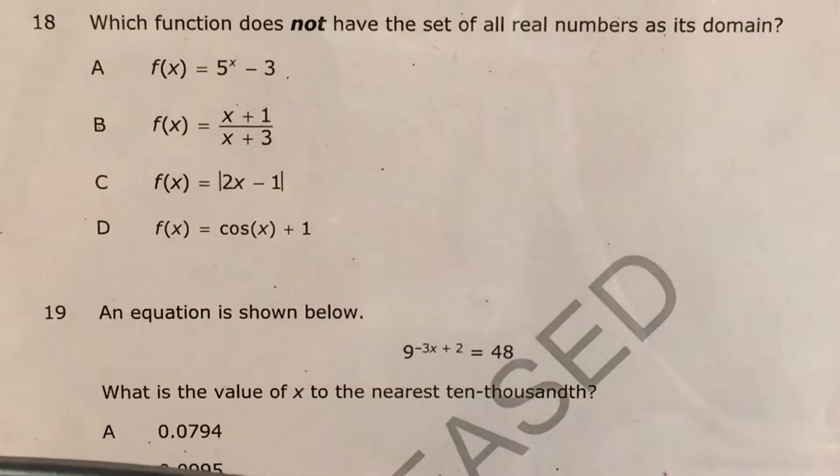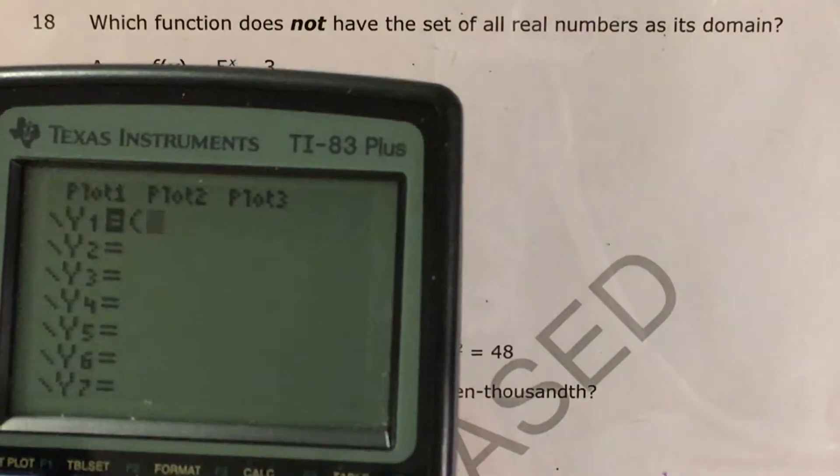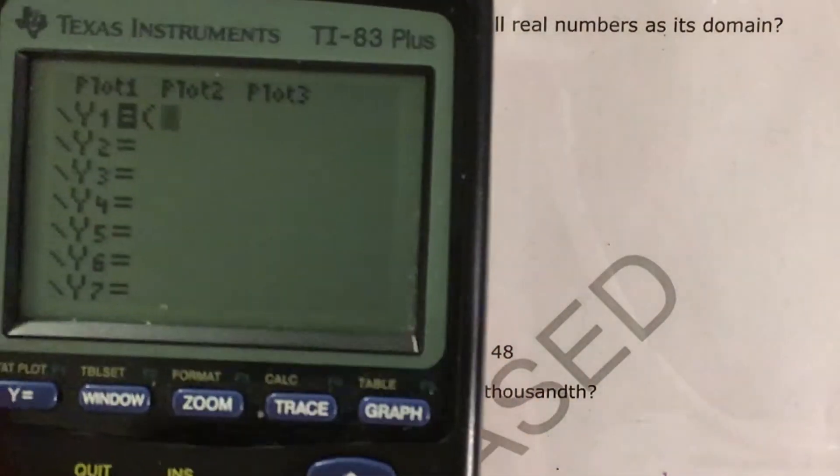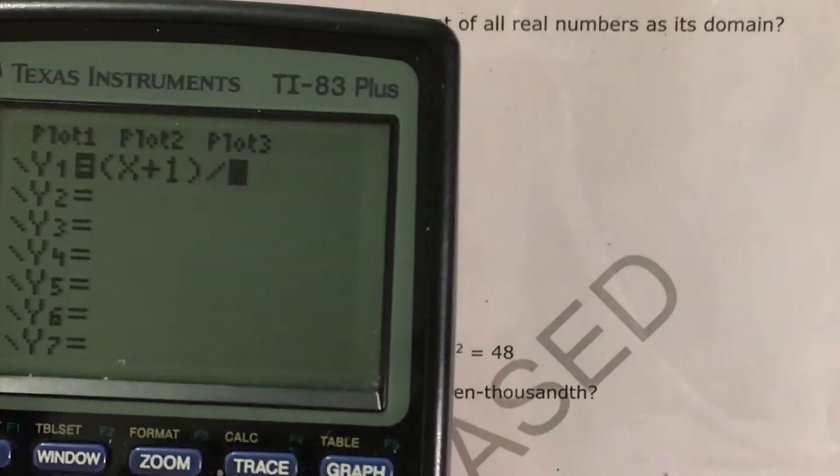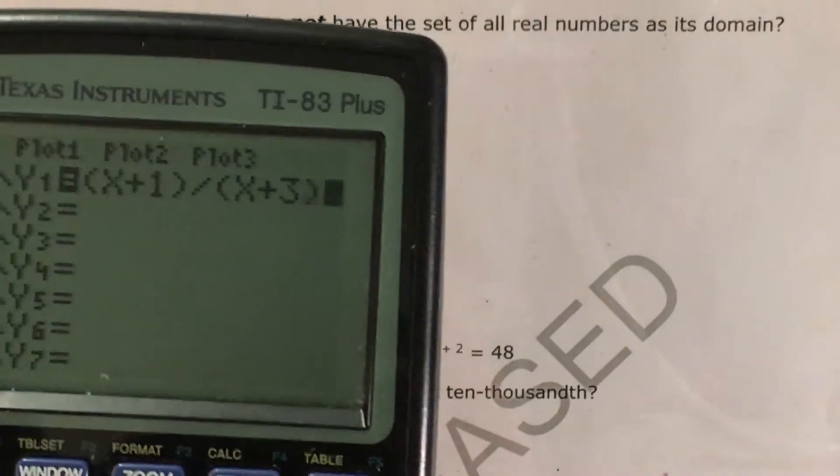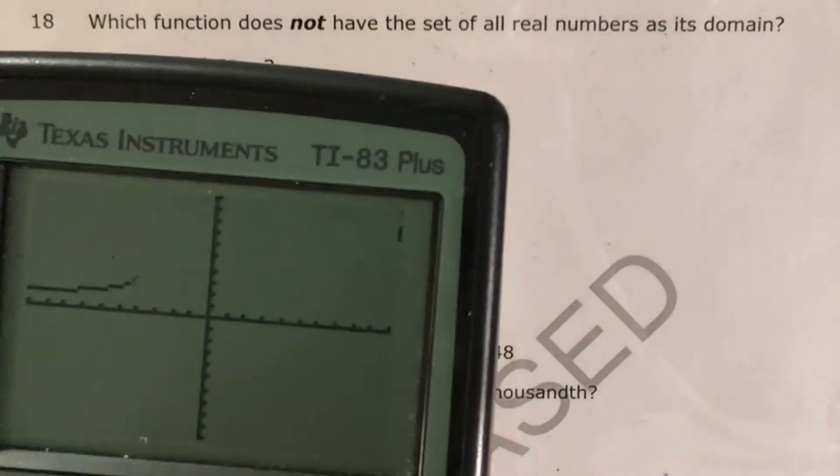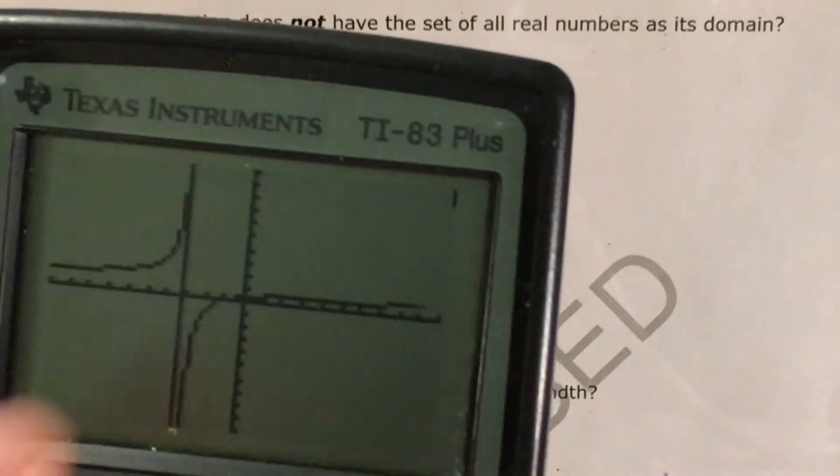If I want to try choice B, I want to put both of my expressions in parentheses, so that's X plus 1 divided by X plus 3. I graph this, and oh my goodness, what is that?